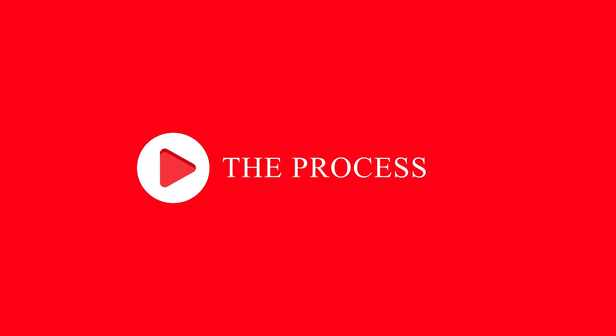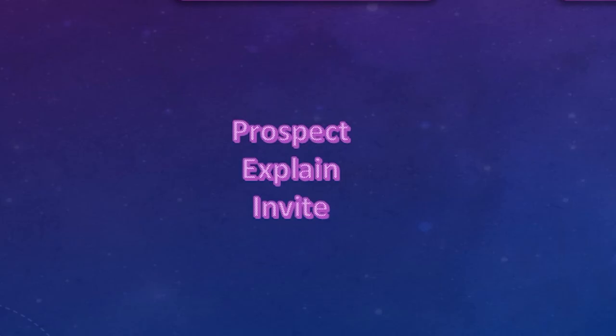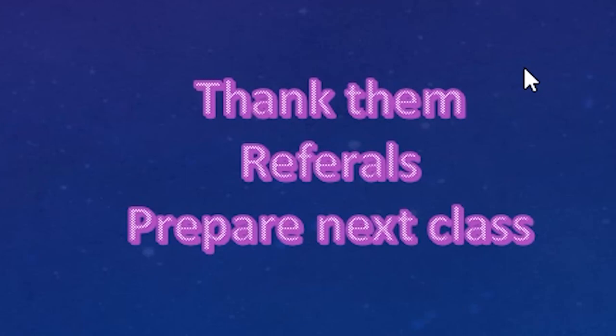So how can we use this in step aerobics class? The first thing we need to know is the process: what happens before the class, during the class, and after the class. Before the class, we need to prospect, explain to people what we are doing, and invite them. During the class, we need to teach, make them sweat, and make them have fun. After the class, we need to thank them, get referrals, and prepare our next class.